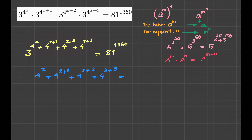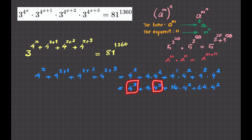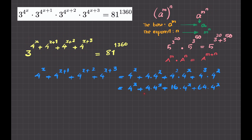So I write 4 to the x. The next term I write as 4 times 4 to the x. For the next, 4 squared times 4 to the x. And the last, 4 cubed times 4 to the x. Simplifying: 4 to the x plus 4 times 4 to the x plus 16 times 4 to the x plus 64 times 4 to the x. Considering 4 to the x as the common factor — or 'box' — I have 64 plus 16 plus 4 plus 1 equals 85 boxes.